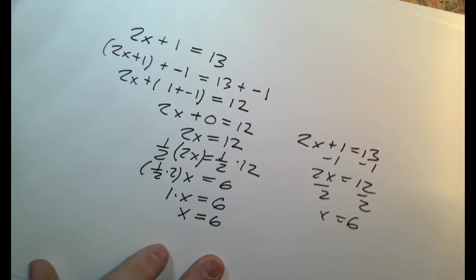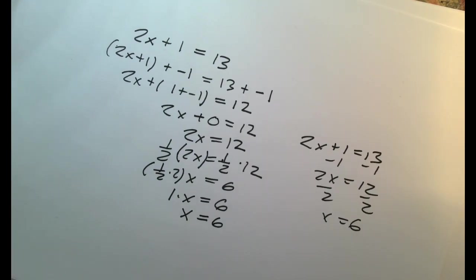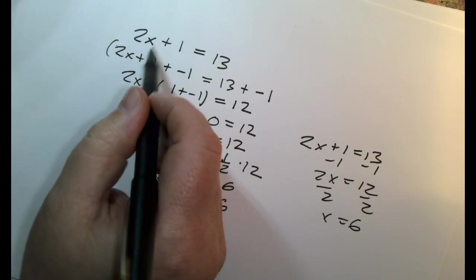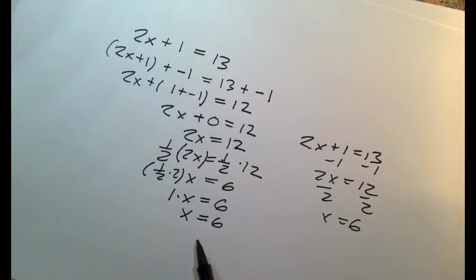Now, here's the thing that makes this solving an equation different from doing a trig identity. Here, what we're trying to do is we're trying to find what value makes this true, and we find that it's 6. With a trig identity, it's different, so let's try one of those.